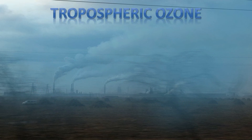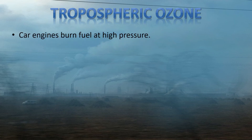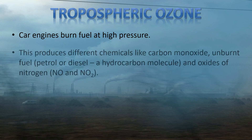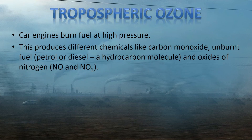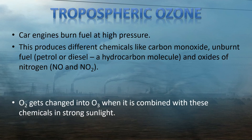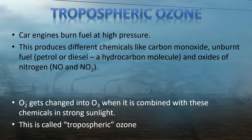Finally, we are going to look at the effect called tropospheric ozone. This is something to do with our modern machines. Cars and other machines burn fuels at very high pressure — this is a special type of burning, and it can produce different chemicals, like carbon monoxide, unburnt fuel hydrocarbons, and oxides of nitrogen, like NO or NO2. O2 can be changed into ozone, O3, when it is combined with these chemicals in strong sunlight. So by having all of these machines burning fuel down in the troposphere, the lowest level of the atmosphere, we can create ozone in the troposphere — and this is why it's called tropospheric ozone.